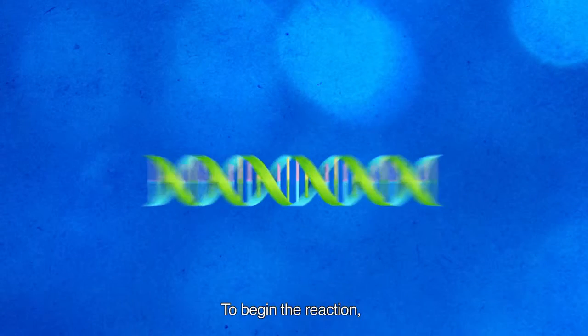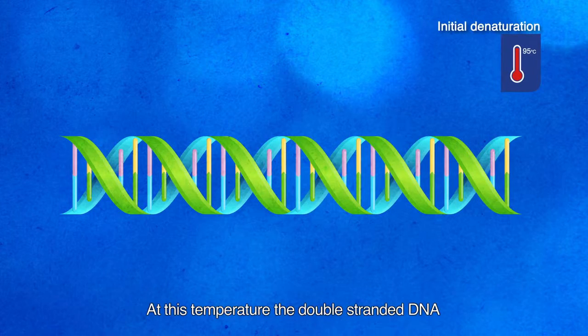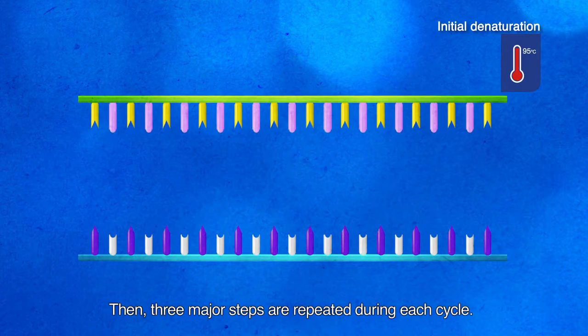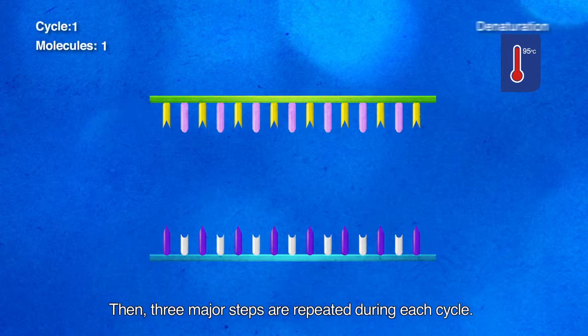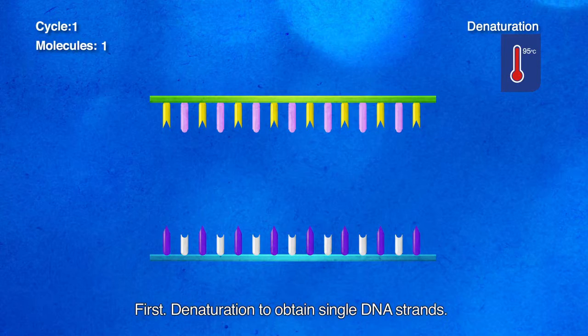To begin the reaction, the temperature is raised to 95 degrees. At this temperature, the double-stranded DNA is separated into single strands. Then, three major steps are repeated during each cycle. First, denaturation to obtain single DNA strands.